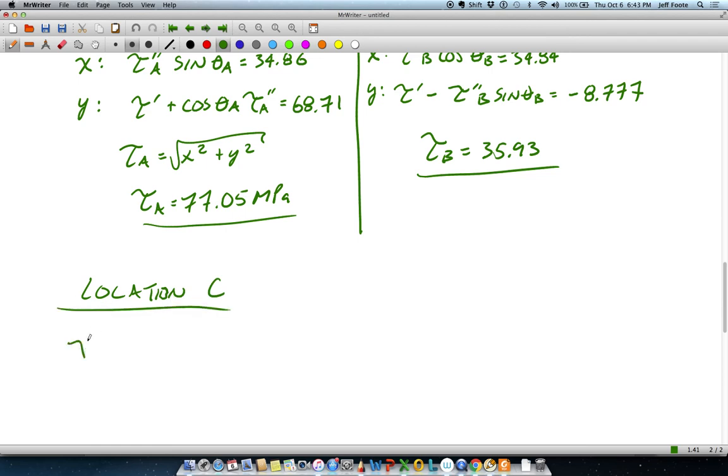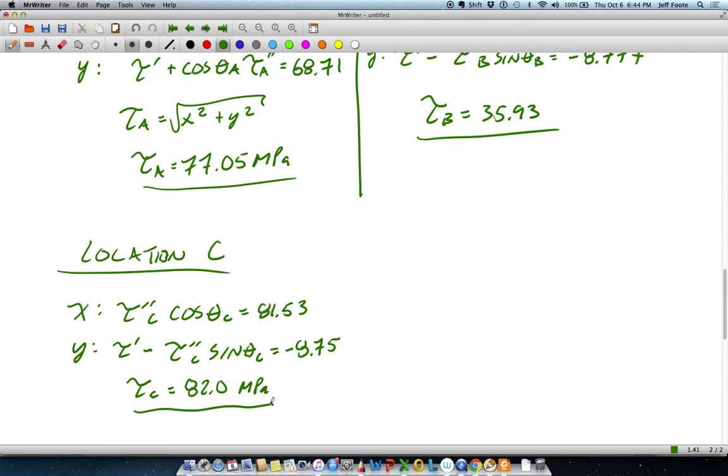Finally, at location C, we'll have Tau double prime C times the cosine of theta C is equal to 81.53. In the y direction, we'll have Tau prime minus Tau double prime C sine theta C. That's equal to negative 8.75 for a magnitude at C of 82 MPa. So those three numbers represent the true maximum shear stress at each location. And of course, failure is going to be predicted wherever it's worst, and that would be location C.